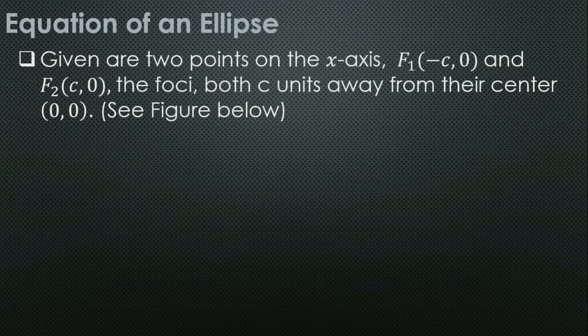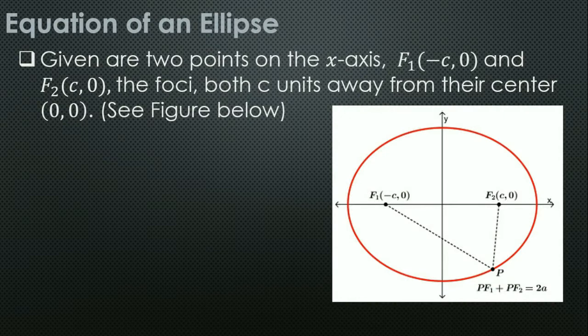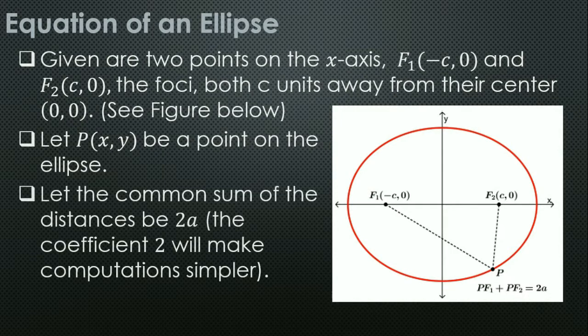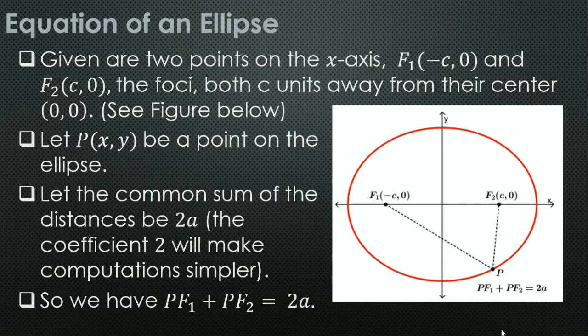Given our two points on the x-axis, F₁ and F₂, the foci are both c units away from their center. Let point P be a point on the ellipse. Let the common sum of the distances be 2a — the coefficient 2 will make computation simpler. So by definition, PF₁ + PF₂ = 2a.